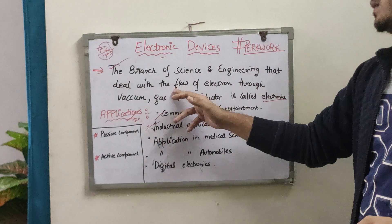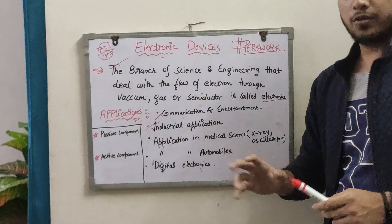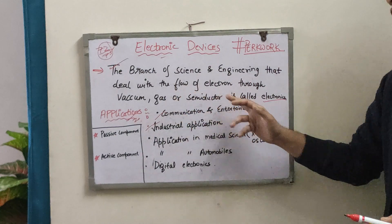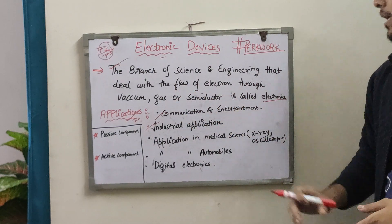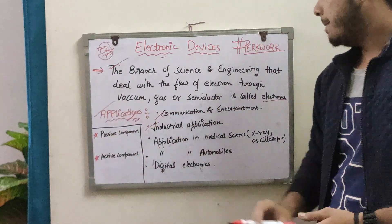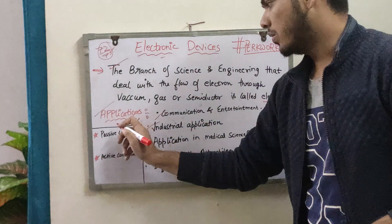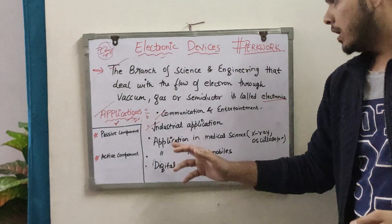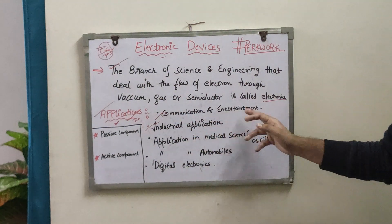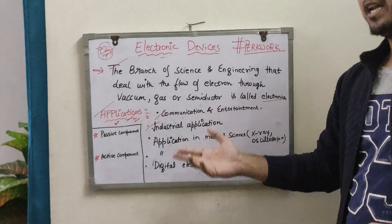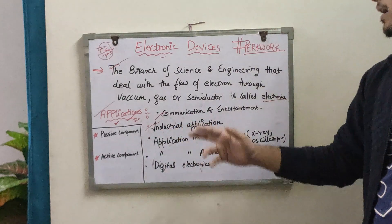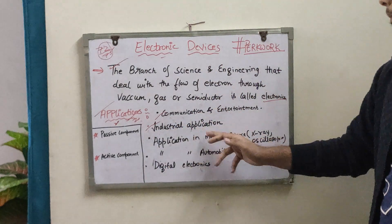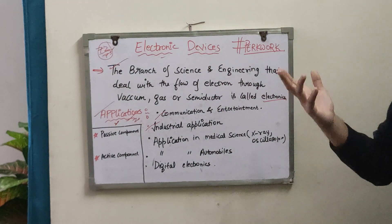So basically electronic devices mein hum woh cheezein padheenge jo flow of electrons ki wajah se hoti hain. Ab iske applications ek baar dekh lete hain, kyunki paper mein yeh question aa jaata hai. Sabse pehle: communication and entertainment — radios, televisions, in sab mein bhi flow of electrons use hota hai. Phir hai industrial application, aur lighting wagaira.